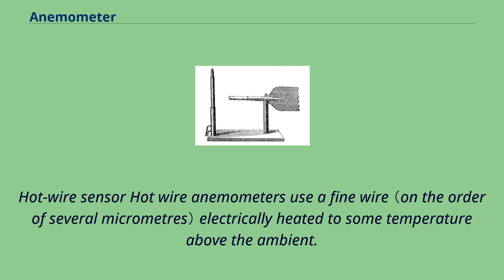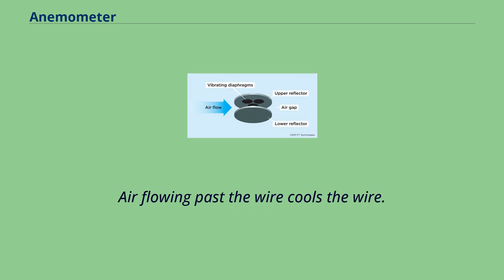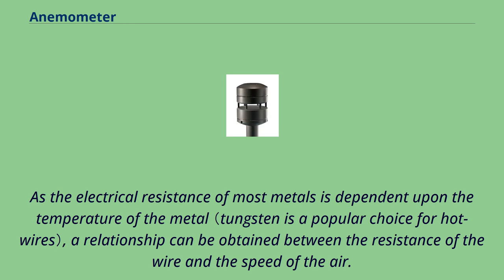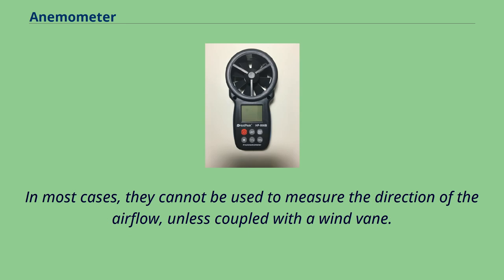Hot-wire anemometers use a fine wire electrically heated to some temperature above the ambient. Air flowing past the wire cools the wire. As the electrical resistance of most metals is dependent upon the temperature of the metal, a relationship can be obtained between the resistance of the wire and the speed of the air. In most cases, they cannot be used to measure the direction of the airflow, unless coupled with a wind vane.